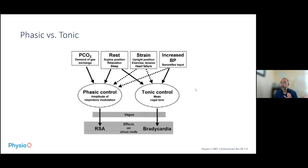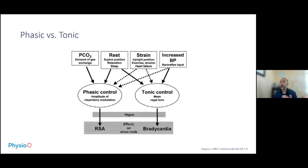Heart rate variability sometimes has different information than heart rate alone. Heart rate is much more a component of tonic control — the mean vagal versus sympathetic tone — whereas heart rate variability, particularly high frequency, which is the respiratory sinus arrhythmia, is a respiratory modulation of heart rate. At rest, relaxation, or sleep, your RSA and high frequency go up while your heart rate goes down. Conversely, under stress, exercise, or heart failure, high frequency variability goes down and heart rate goes up.